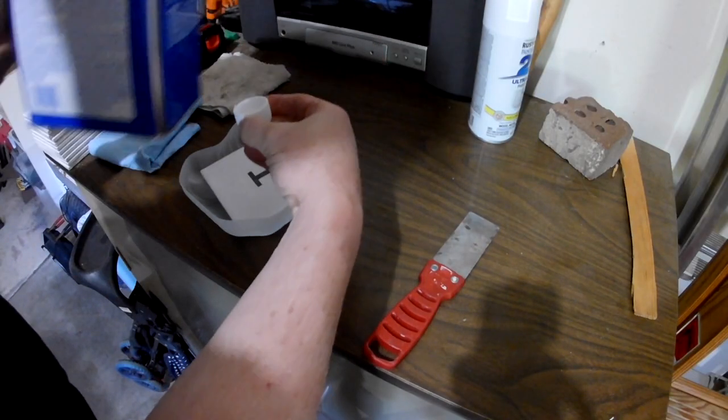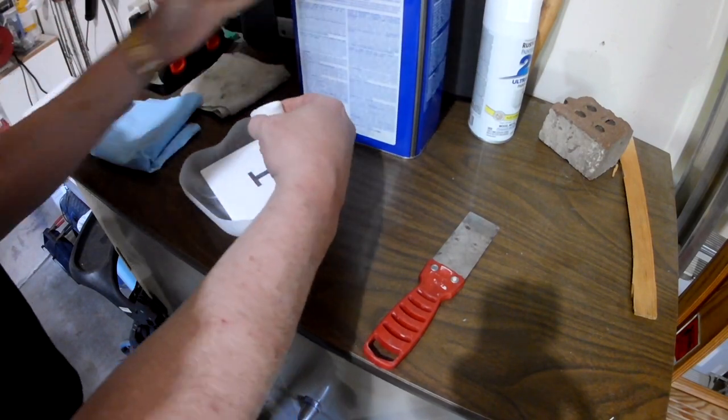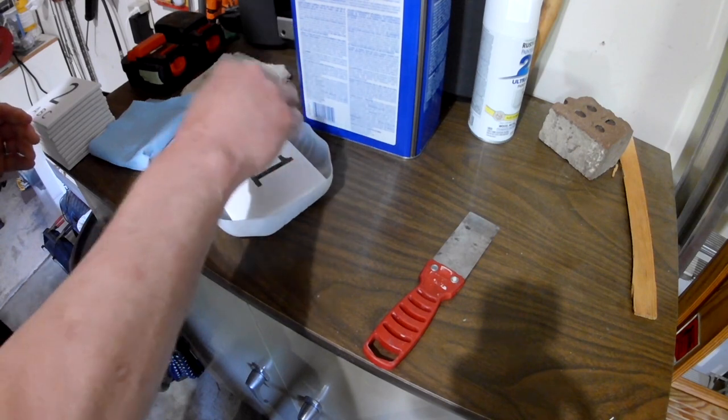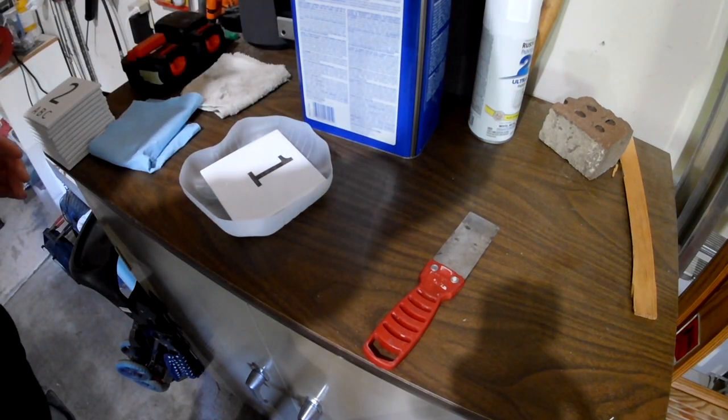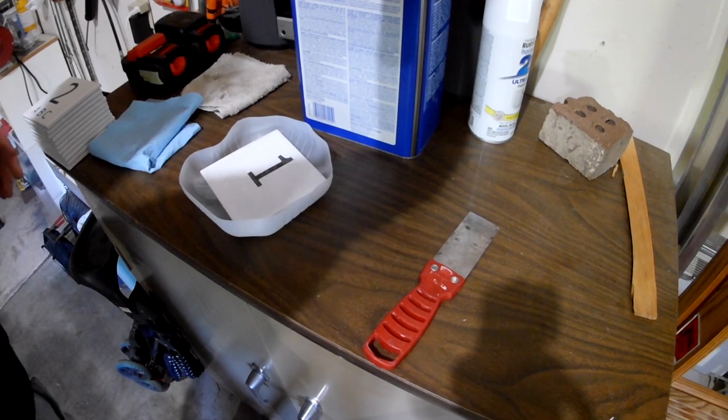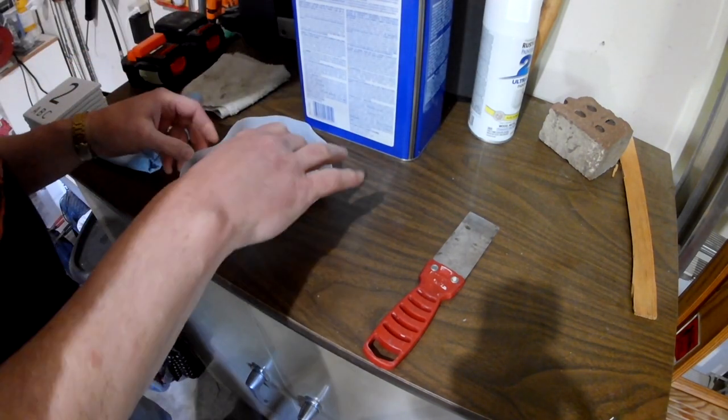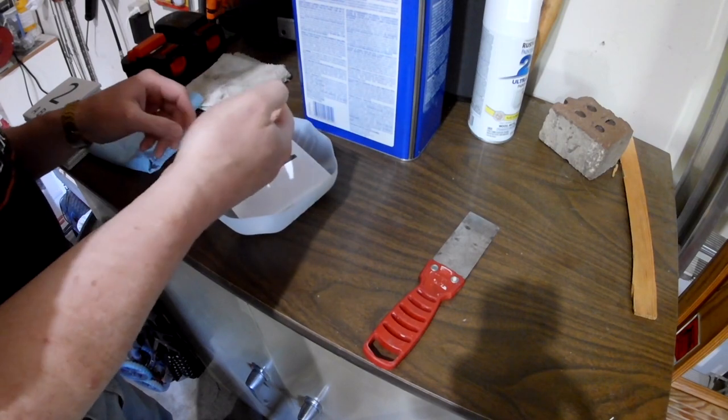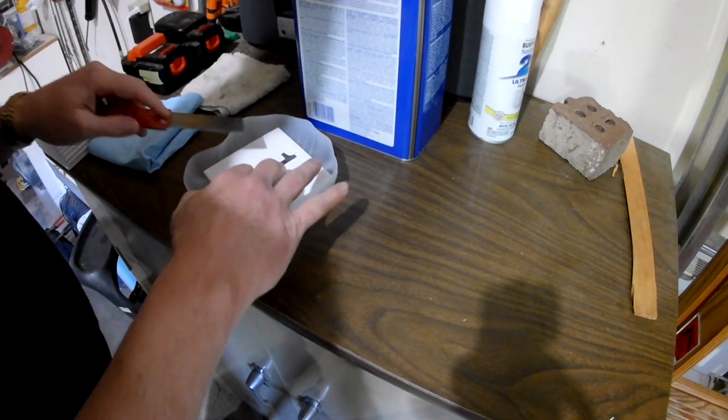To clean the paint off of the tiles, I'm going to use lacquer thinner. I use about a cap full for a tile, seems to be about the right amount. In the past, I've used mineral spirits to clean the paint off. Even though that worked, it didn't work quite as well as the lacquer thinner. The lacquer thinner really cuts through that paint quickly and takes it off.